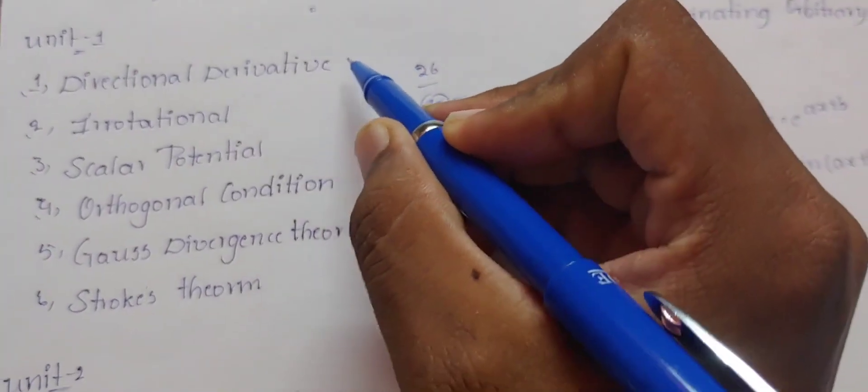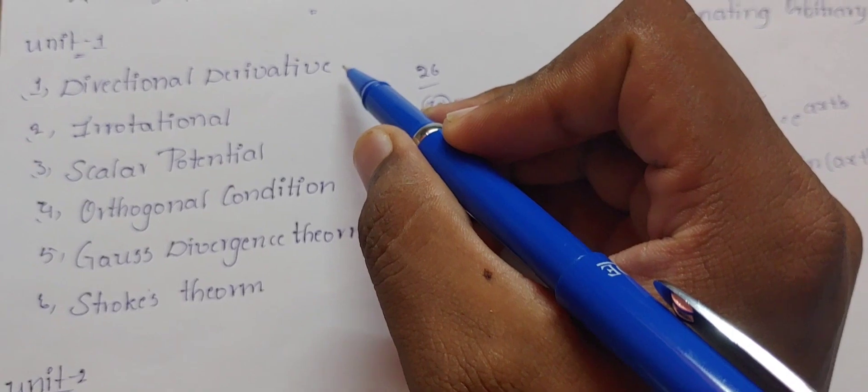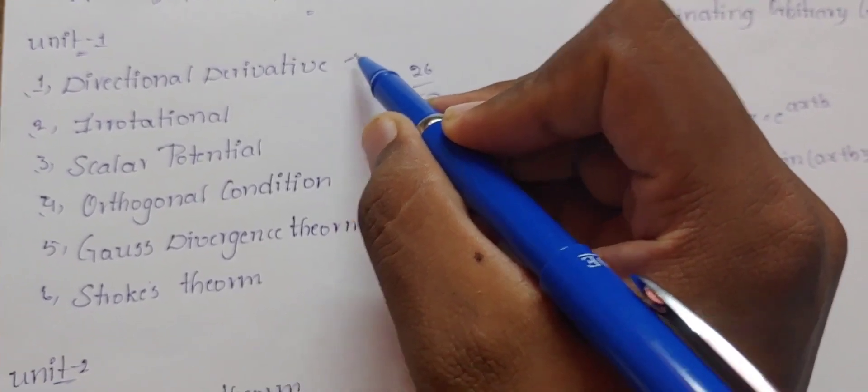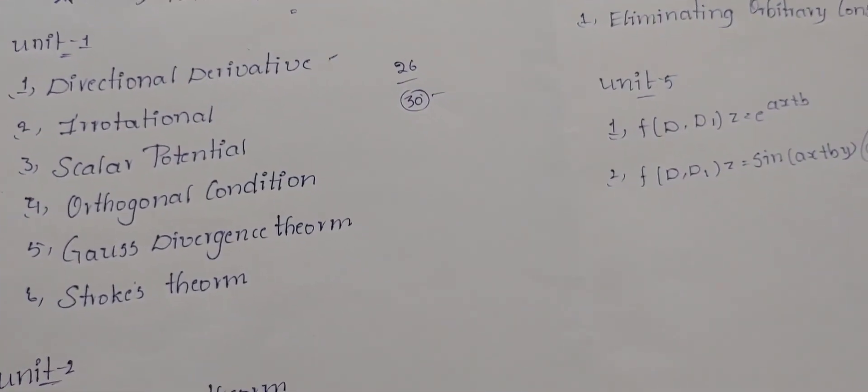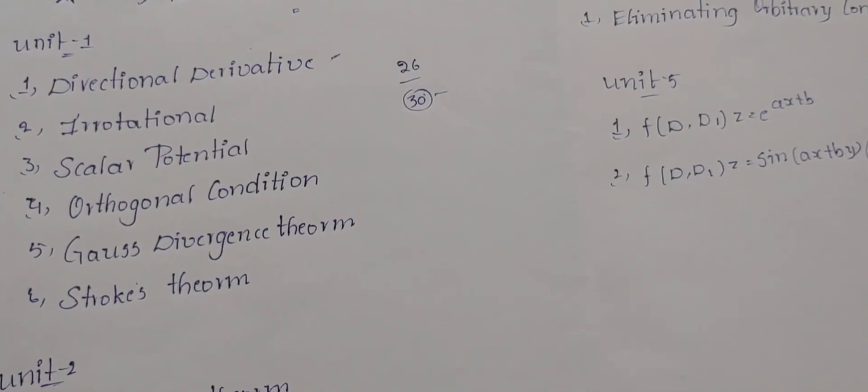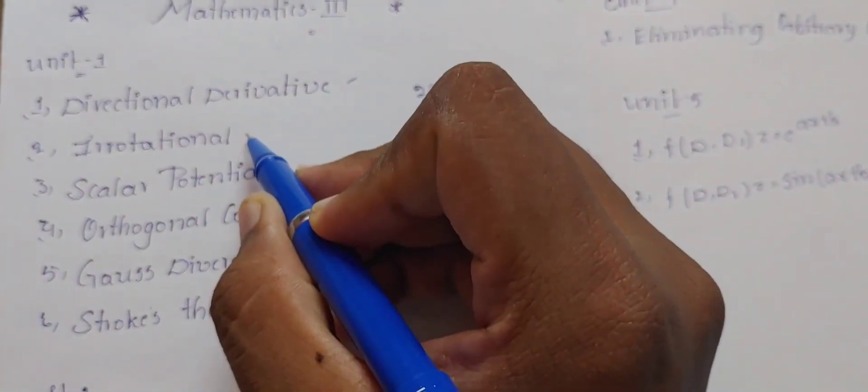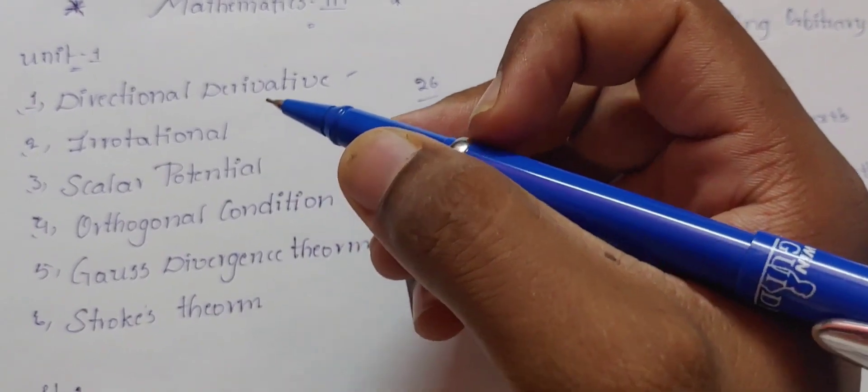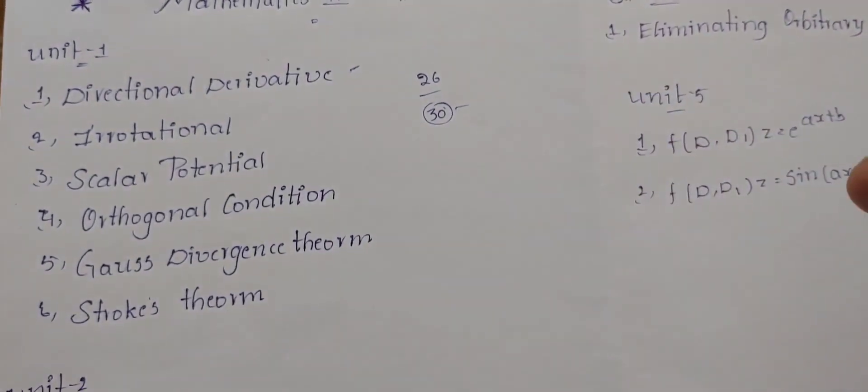So 1, 2, 3, 4, and 5, 6. I mean this is the name of the differential derivatives, irrotational, scalar potential, and orthogonal conditions. It is 8 or 7 marks, and unit 4 is way less.